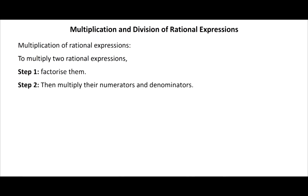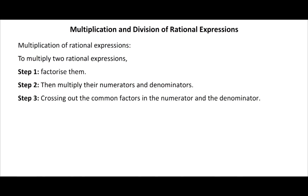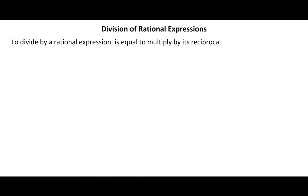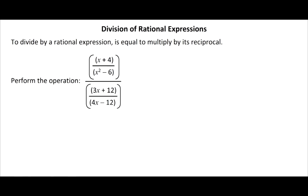Multiplication of rational expressions: Step 1 — factorize them; Step 2 — multiply numerators and denominators; Step 3 — cancel common factors. Example: multiply (x squared plus 6x plus 9)/(x squared minus 9) by (3x minus 9)/(x squared plus 2x minus 3). Click the solution button to view the solution. Division of rational expressions: multiply by the reciprocal. Example: perform (x plus 4)/(2x minus 6) divided by (3x plus 12)/(4x minus 12). Click the solution button to view the solution.